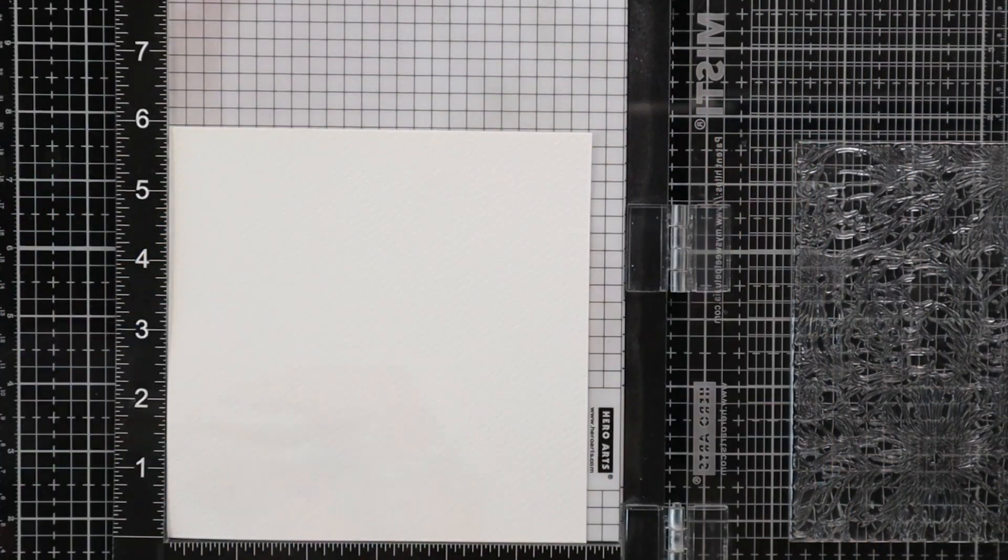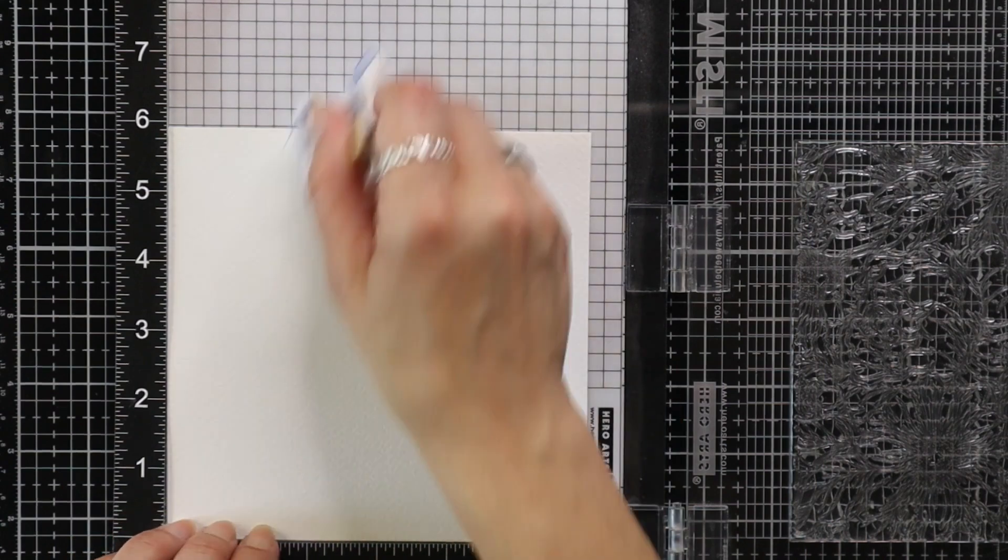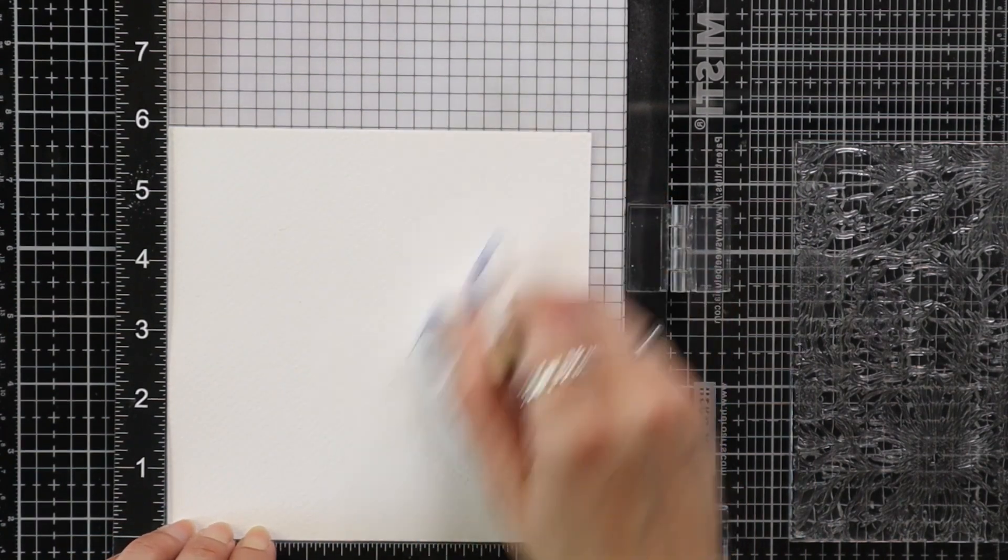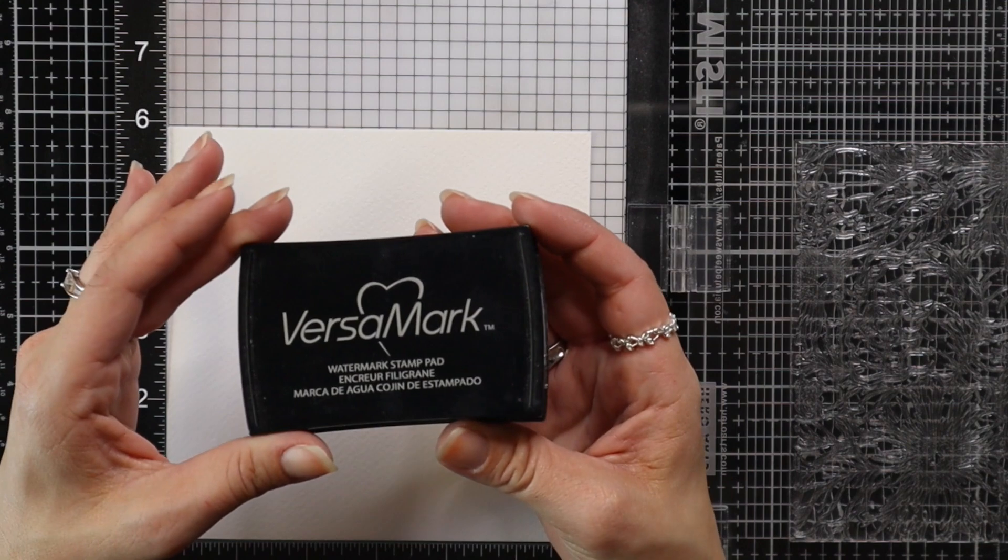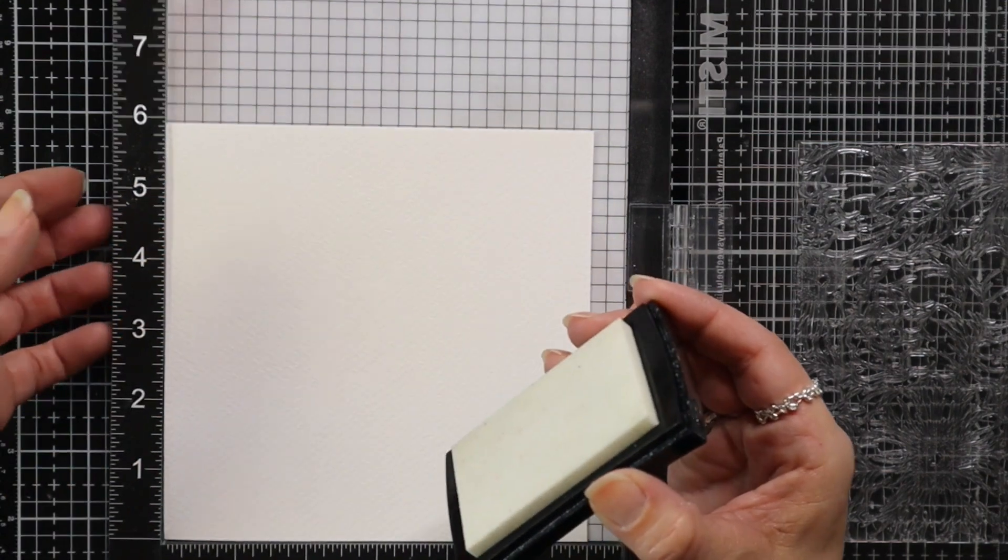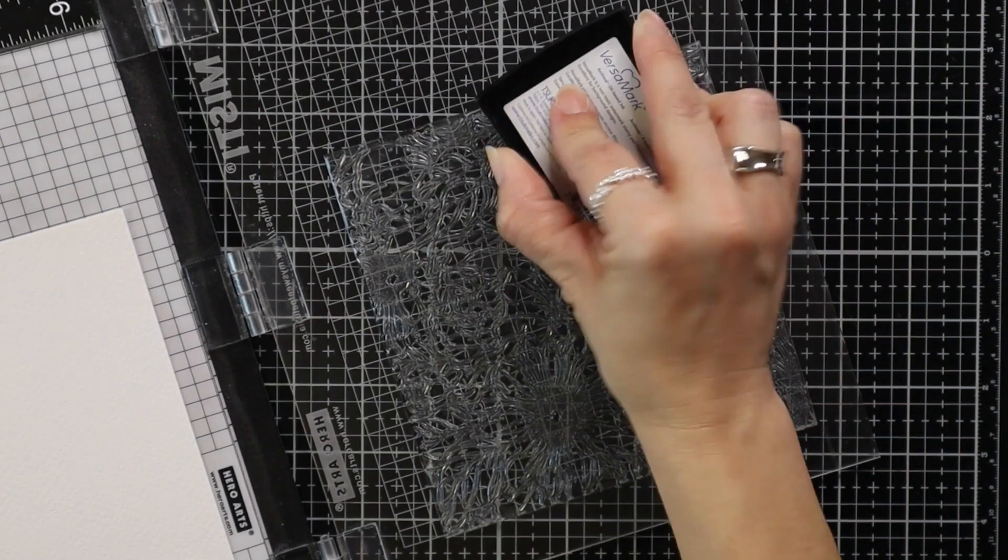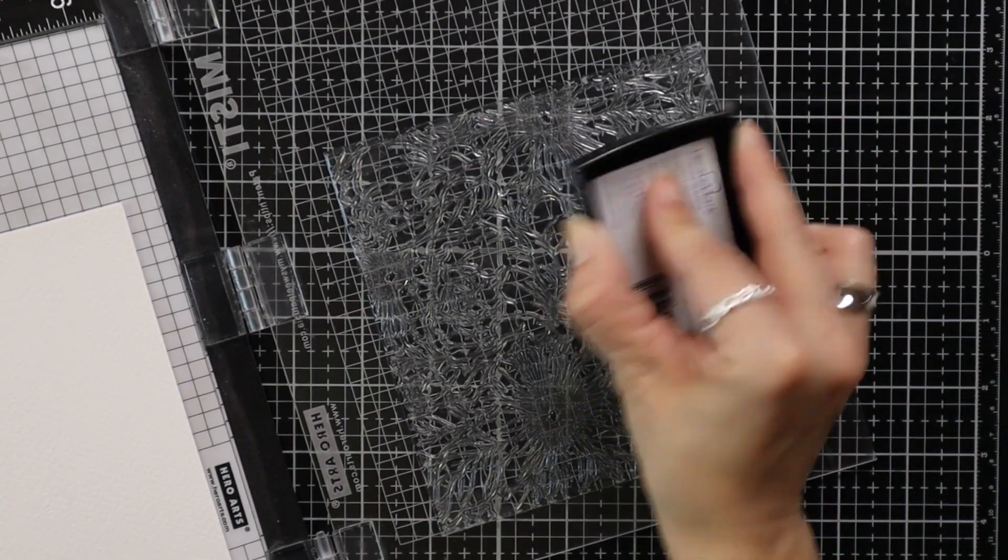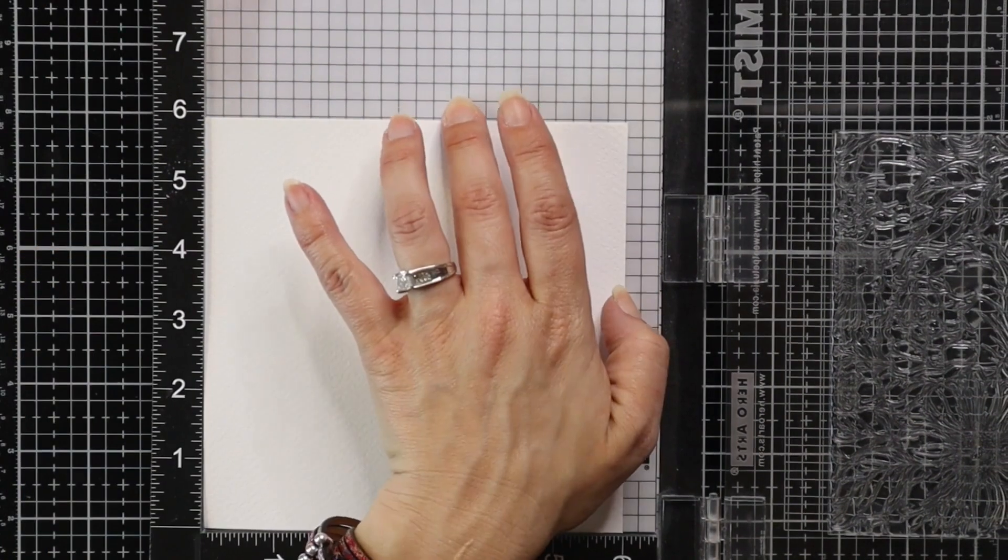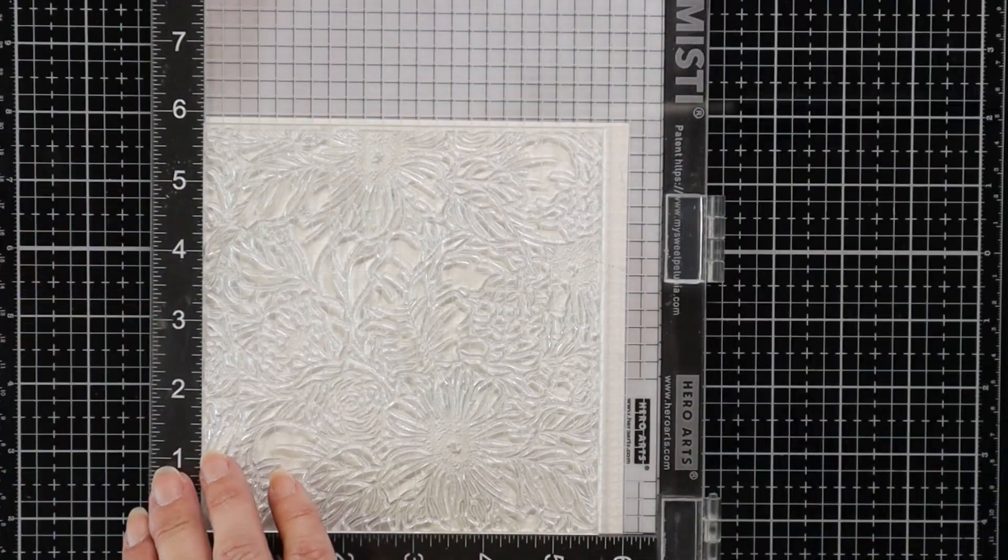Then I'm going to bring in a piece of Fabriano Artistical watercolor paper cut to just a little bit larger than my stamp set and I am prepping that with an anti-static powder tool and then I'm going to ink up this entire background using Versamark ink. Then I can close the door of my Misti and stamp this down onto my cardstock.